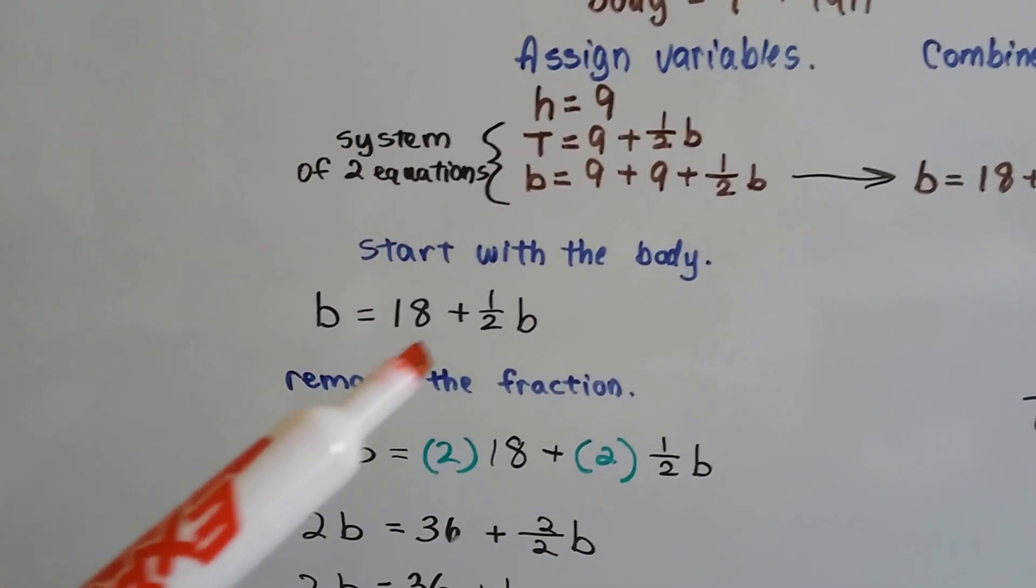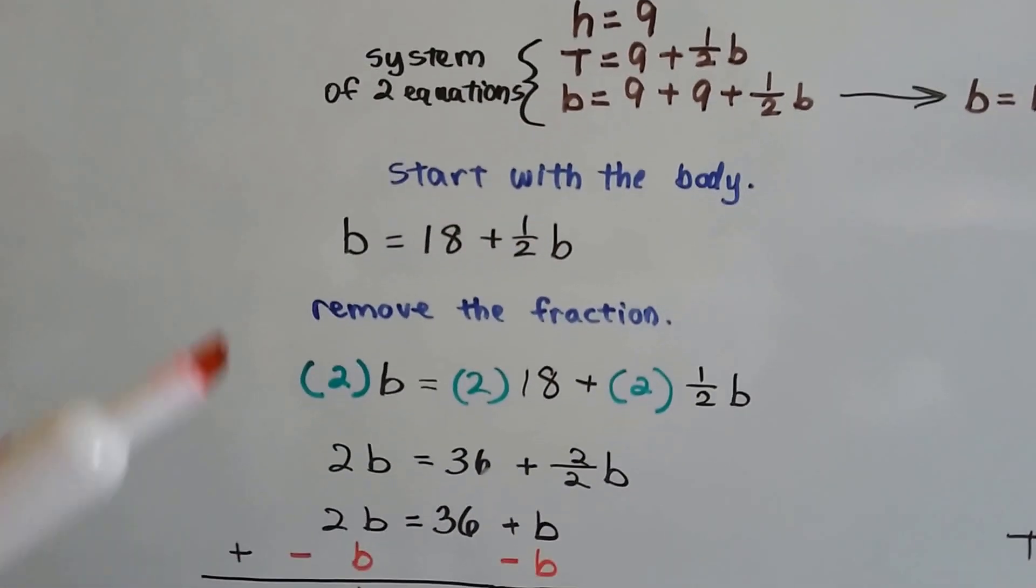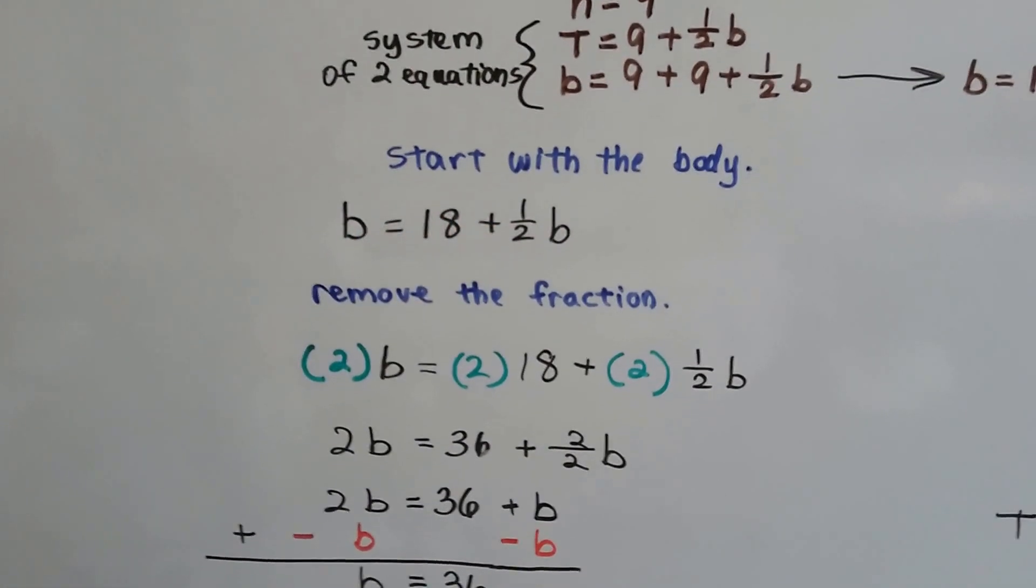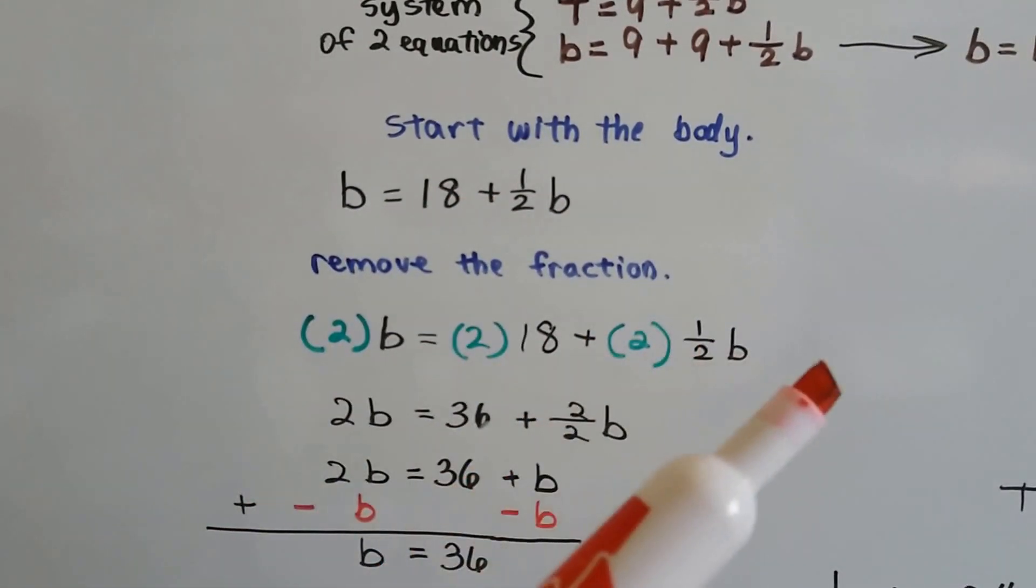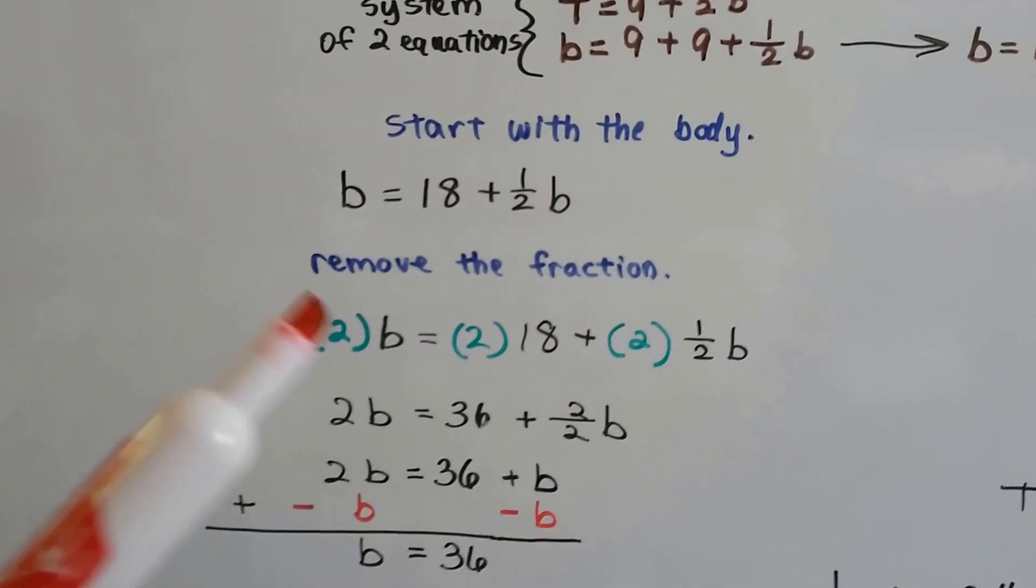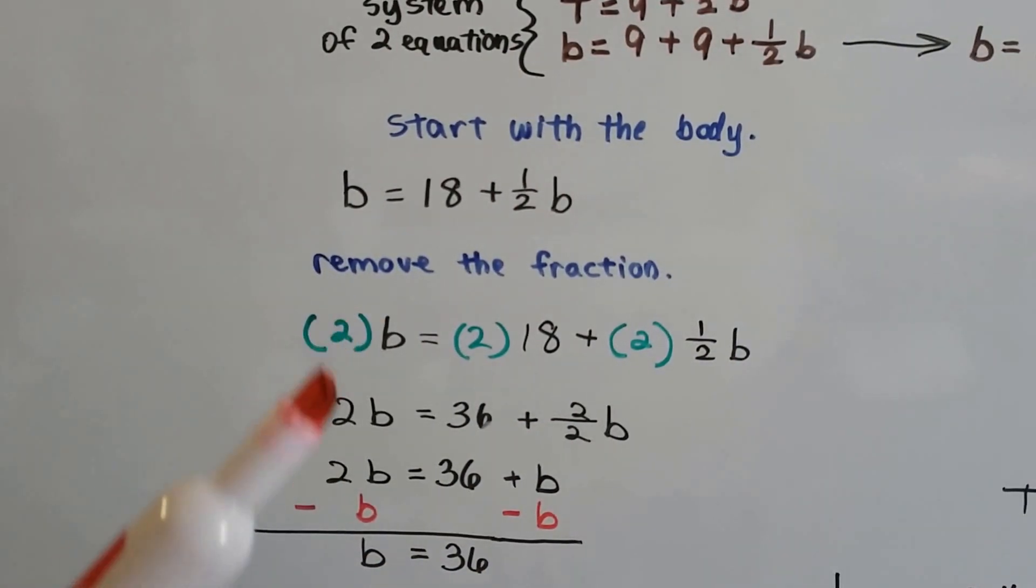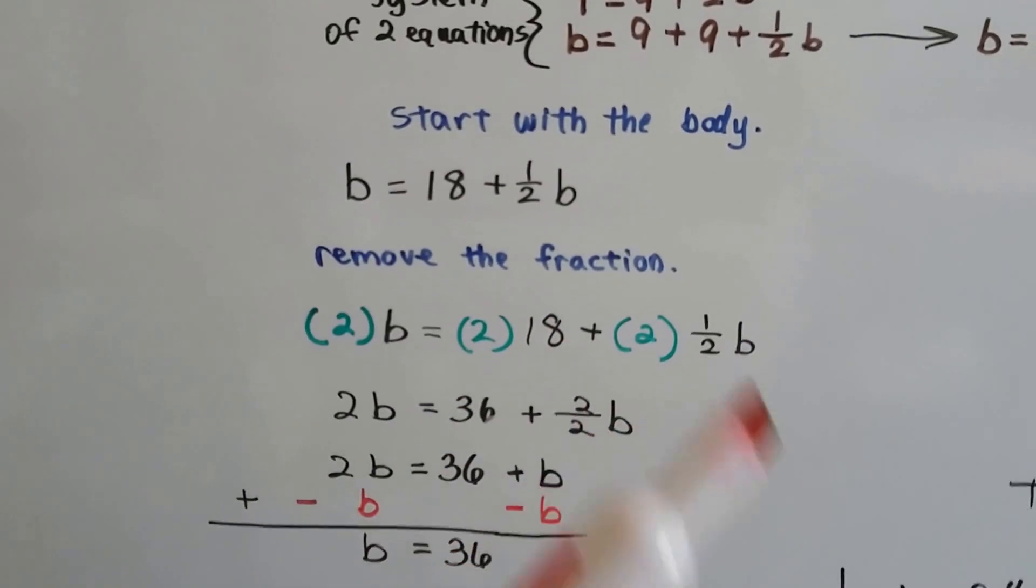The body is 18 plus half b. We need to remove that fraction. So what we can do is we can multiply every single term by two. We don't forget this side of the equal sign. We multiply every single term by a two,